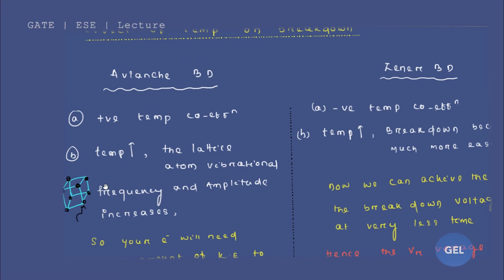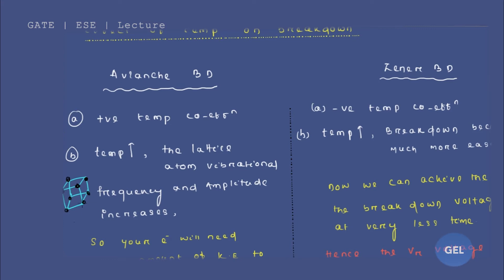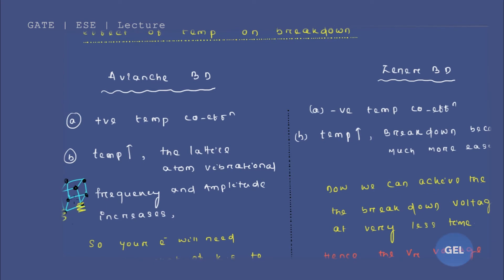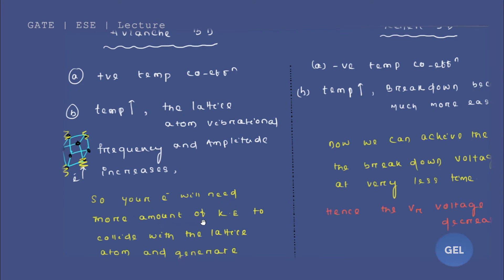But now, what happens when you increase the temperature? These atoms start oscillating. It becomes impossible for the electron to go and collide with the atom in the usual way. The electron will need more and more kinetic energy to collide with the lattice atom, because the lattice atom is now vibrating and oscillating, and the electron does not have sufficient kinetic energy to reach and collide with those lattice atoms.